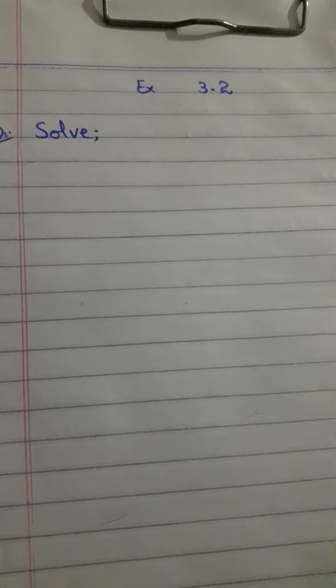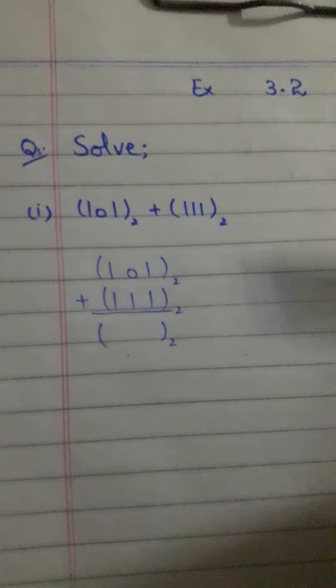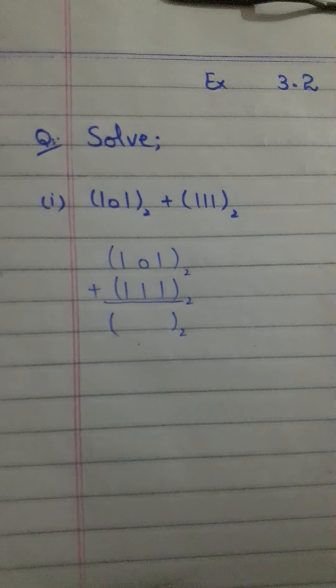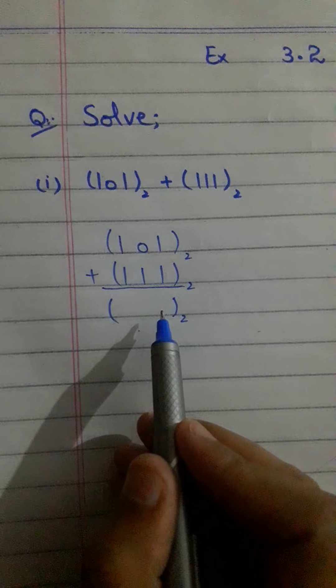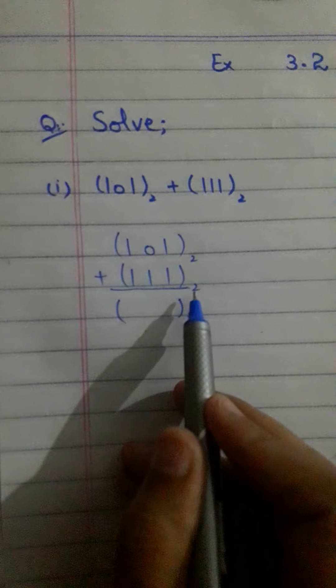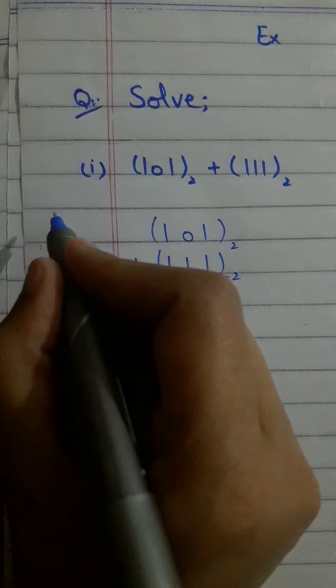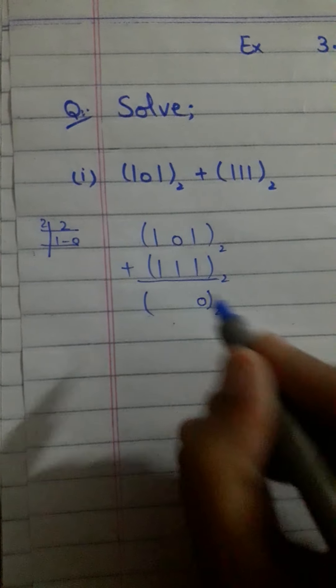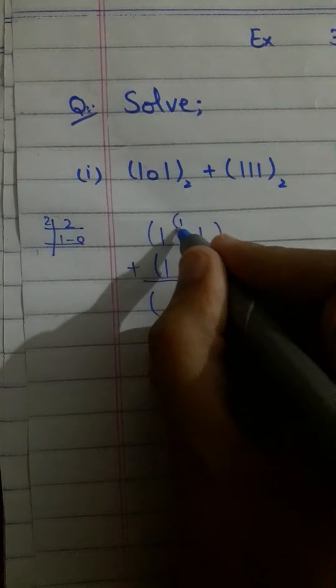First, we are discussing base 2. In base 2, when you have 1 plus 1, the result is 2, but you do not write 2 here because our base is 2. You have to convert: 2 in base 2 becomes 1 and 0. So we write 0 here, and 1 is carried as a carry.